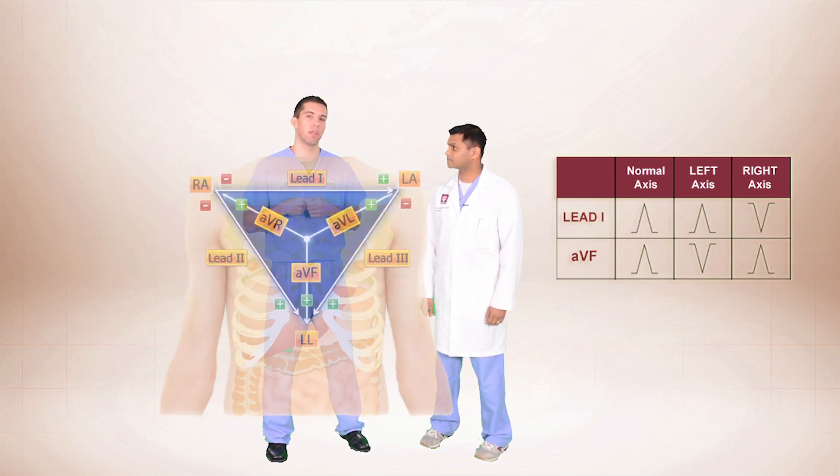So remember that lead 1 runs horizontally and to the patient's left. And lead AVF runs vertically and towards the patient's feet. So if we have a positive QRS complex in leads 1 and AVF, then we know our vector is somewhere in between those two leads or normal axis.